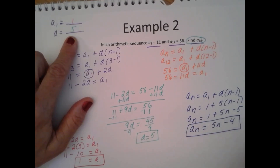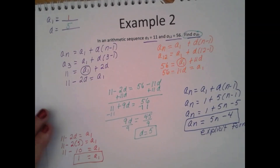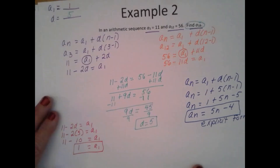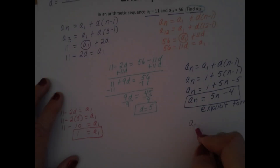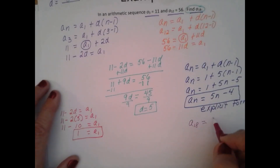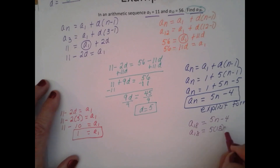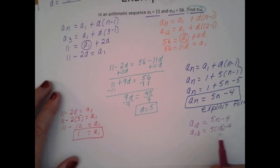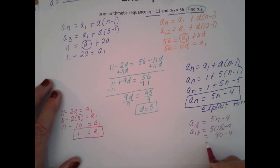So here we have the explicit formula. You might want to go ahead and label these so that you can keep all these equations straight — this is the explicit form. Now since I have the explicit form, I'm going to finally get to my answer. Find A sub 18: A sub 18 is equal to 5 times 18 minus 4. 5 times 18 is 90, and 90 minus 4 gives me 86.